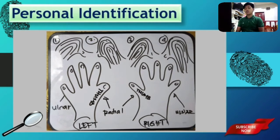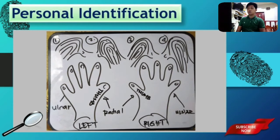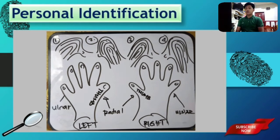For figure number one, let's assume that it is taken from our left hand. We notice that the recurving ridge opens towards the ulnar bone — which means the pattern is considered an ulnar loop. The ulnar bone is located near our little finger. Since that is the opening of the recurving ridge, we consider it an ulnar loop. But if the same fingerprint pattern from illustration number one was taken from the right hand, it would change — instead of being an ulnar loop, it would be considered a radial loop, because the opening of the recurving ridge would now be towards the thumb.